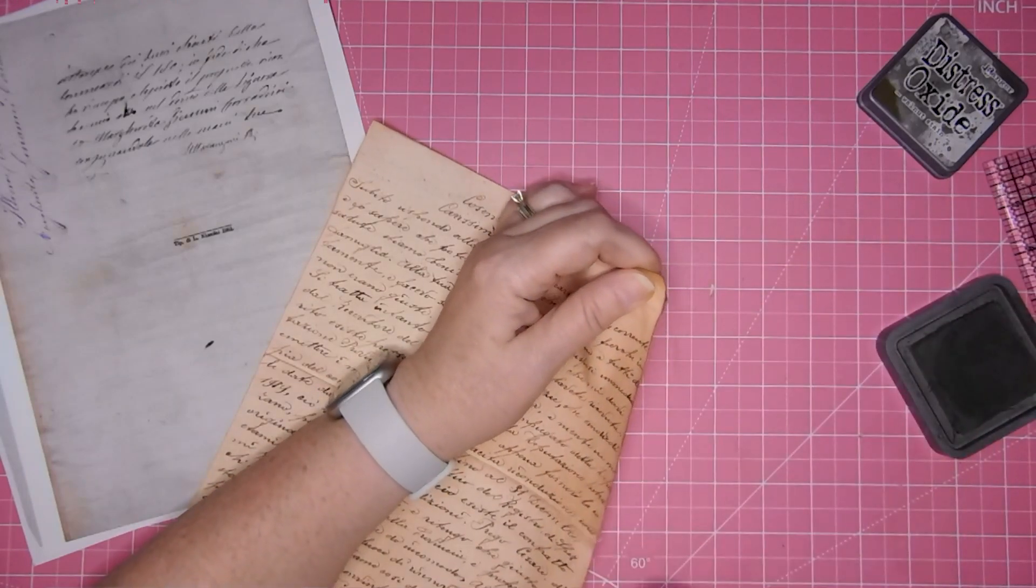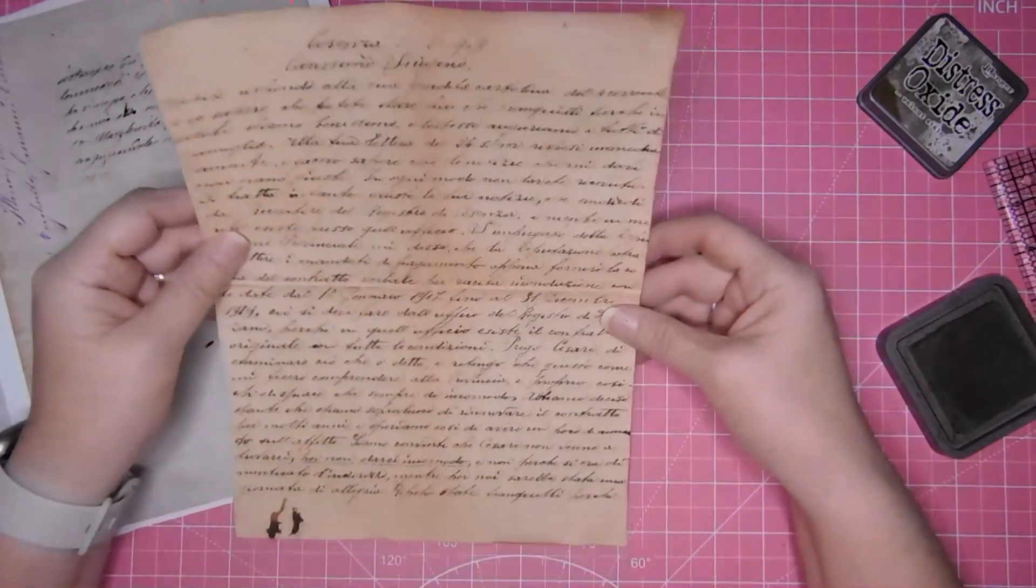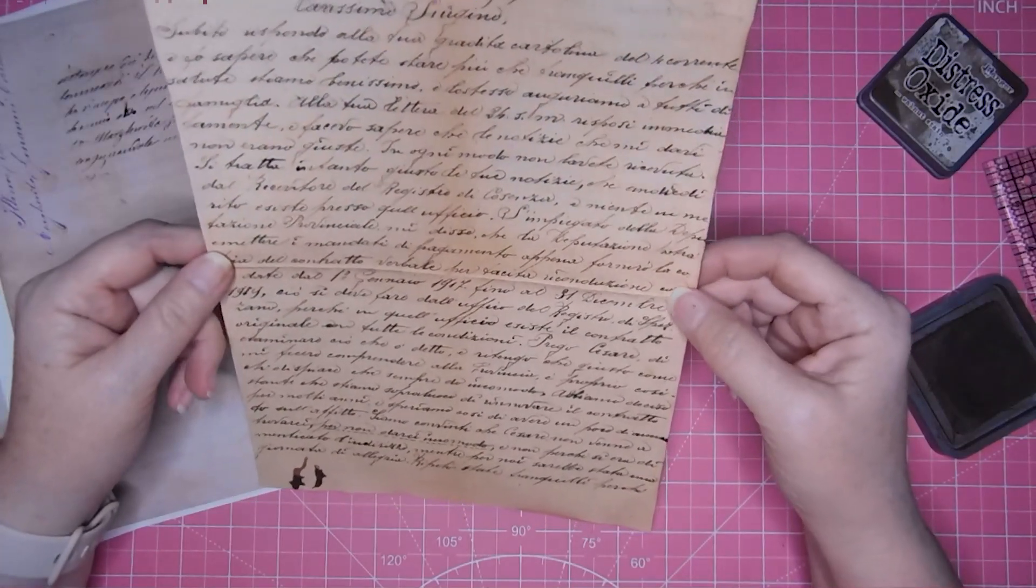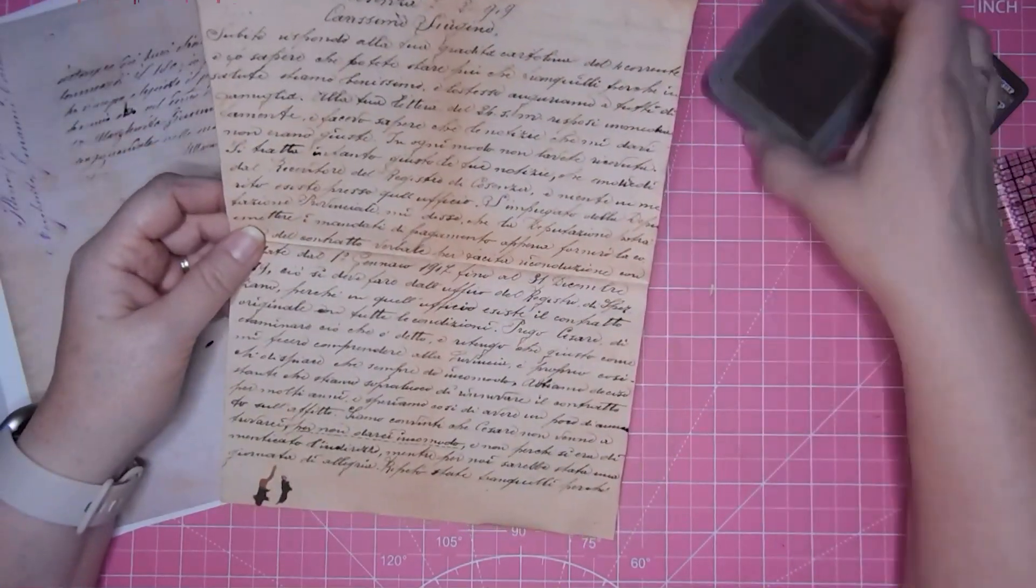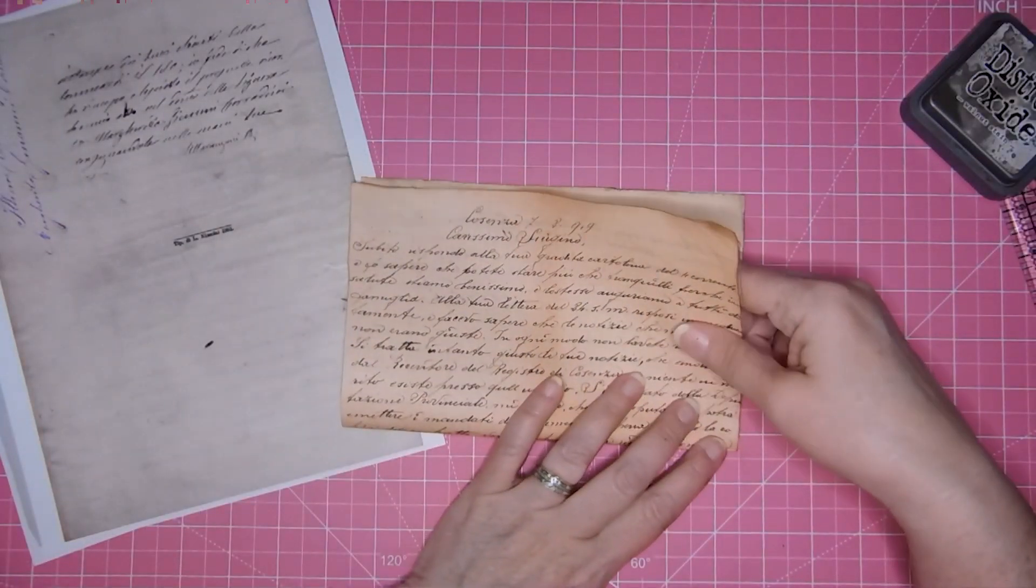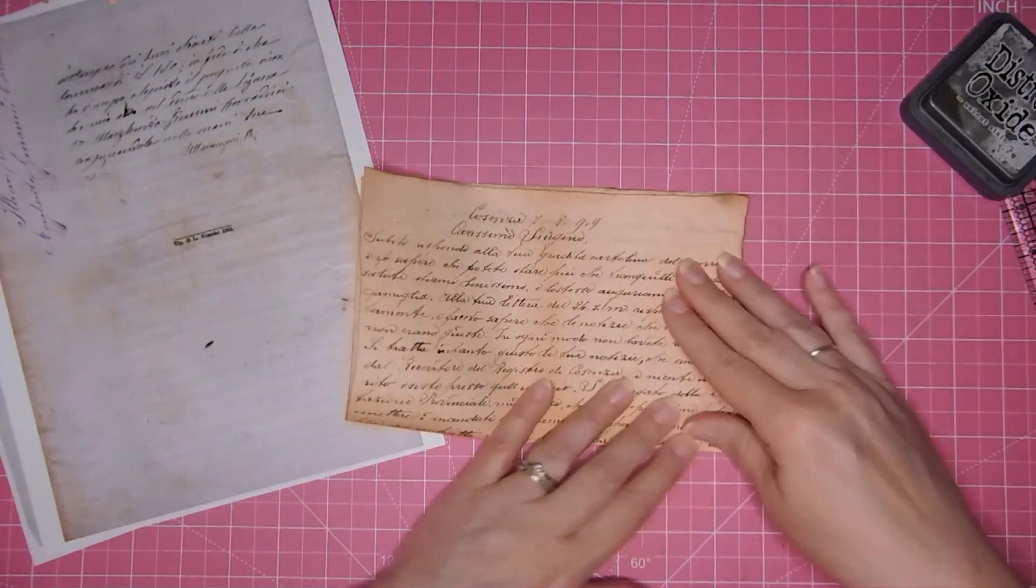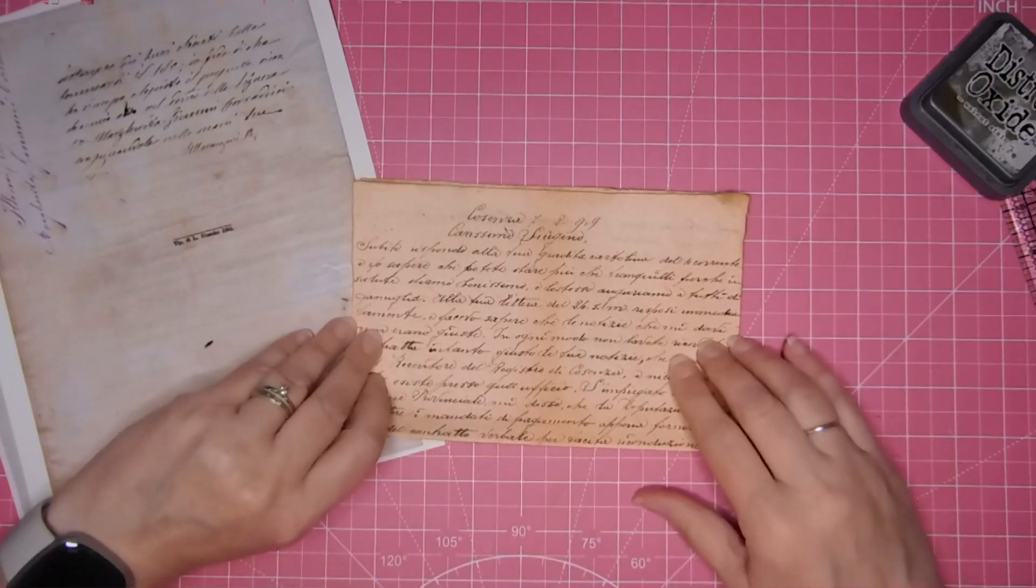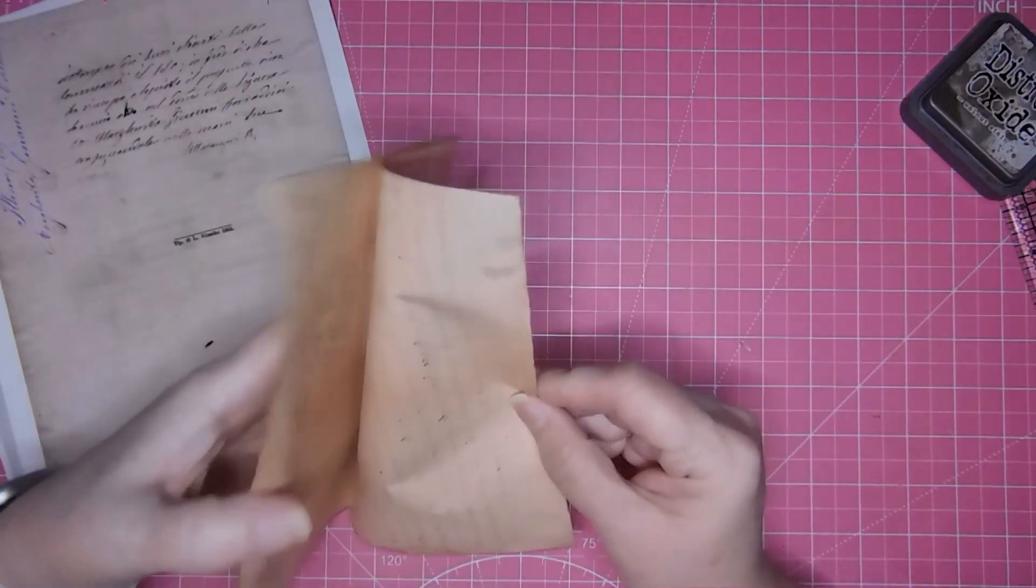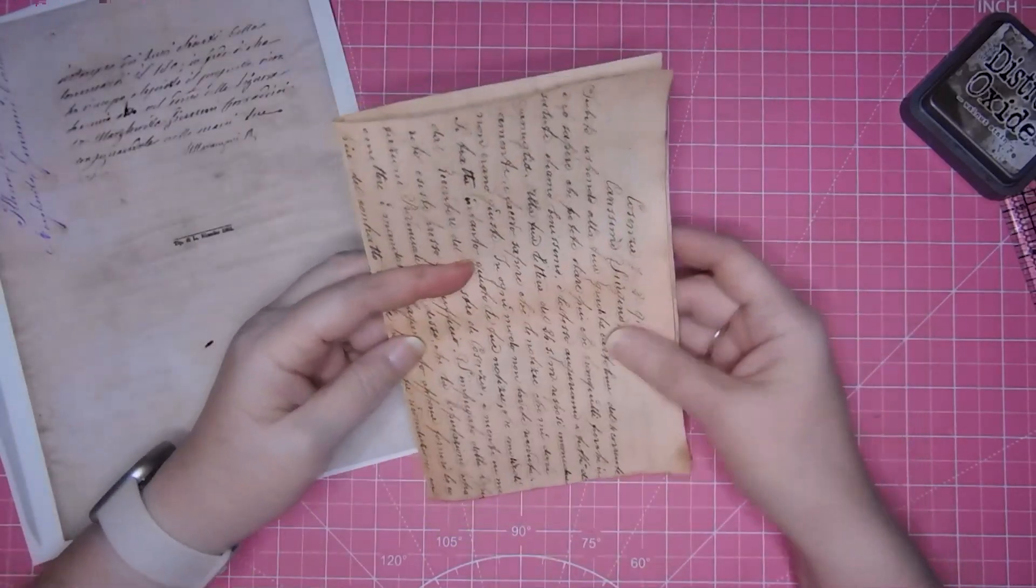For right now we are doing faux antique letters to put in our junk journals. Now you could use these for anything. You could use them for a pocket, you could use them for just stuffing in a pocket, and I'm gonna go ahead and fold on that line right there.